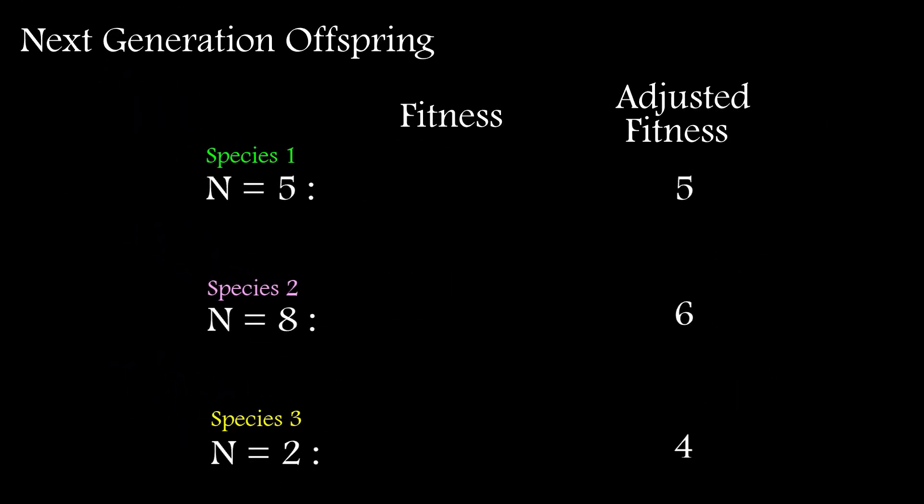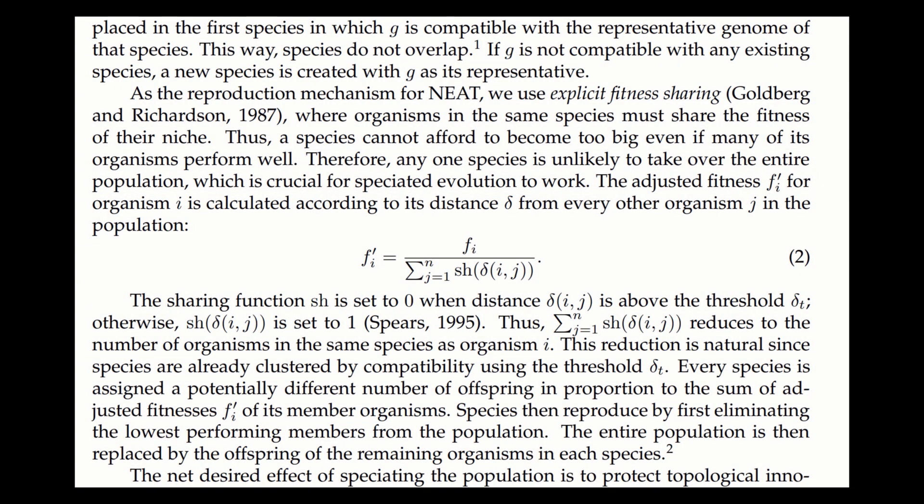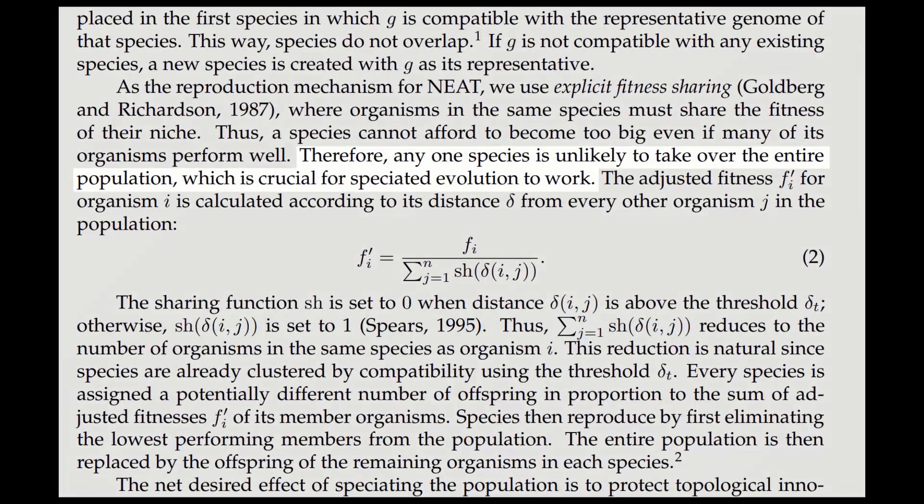Species 2 will drop from 8 to 6, while species 3 can breathe a little, growing from 2 to 4. With this approach, a species can't afford to become too big, even if many of its organisms perform well. Ken details this clearly in his paper.